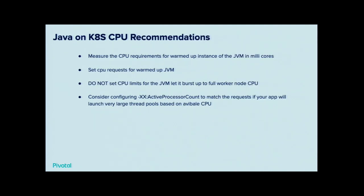There was a fascinating talk from Zalando where they looked at how cgroups are actually implemented. It turns out that if you get 200 millicores, that means in 100 milliseconds you get 20 milliseconds of execution time. So if you get your 20 milliseconds but only use 10 milliseconds of that - that's it. They ended up adding some features to Kubernetes to deal with it. For any questions about CPU usage in Kubernetes - set minimum CPU requests equal to your steady-state warmed-up requirement, don't set limits.